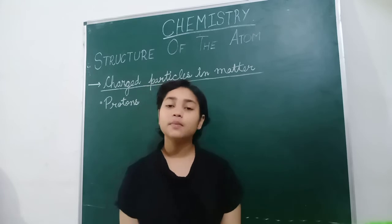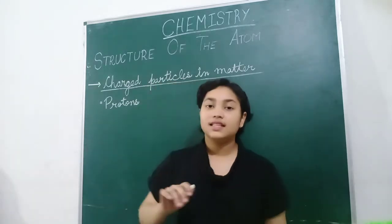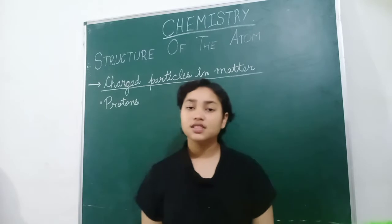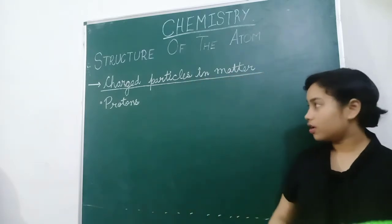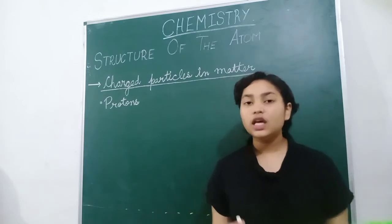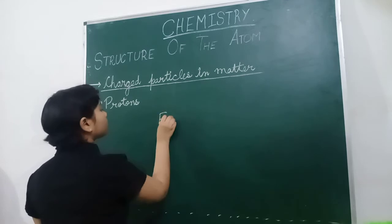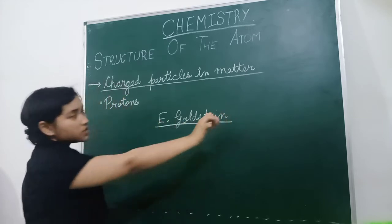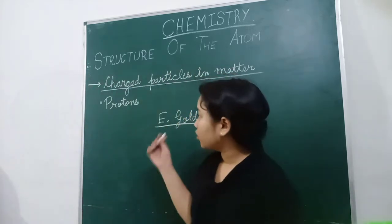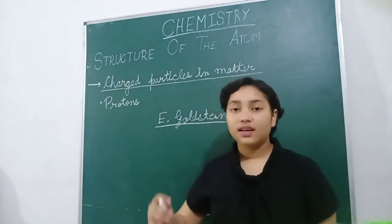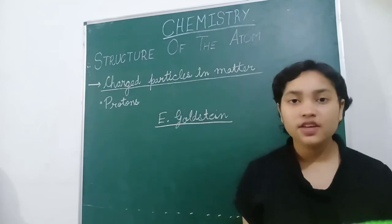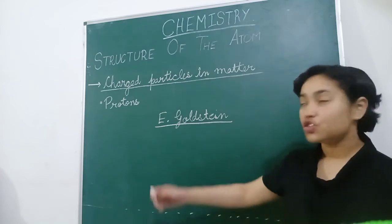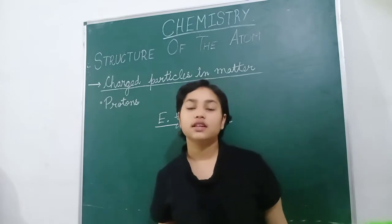Before going to the structure of an atom, let us first discuss protons and other subatomic particles. Protons are the positively charged subatomic particles of an atom. Protons were first discovered by E. Goldstein. He was the scientist who discovered protons before the discovery of electrons — Goldstein discovered it in 1886, which was earlier than J.J. Thomson. So protons were discovered first, then electrons were discovered further.